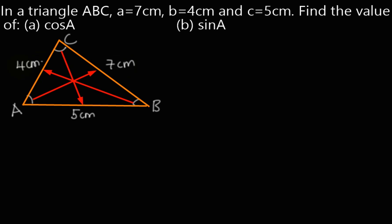Now, to obtain cosine of angle A, we are going to use the cosine rule. And it states that cosine of angle A is equal to b² + c² - a²